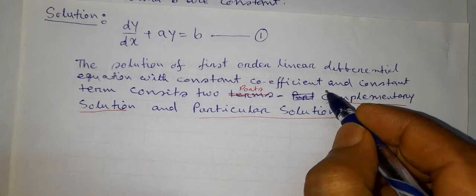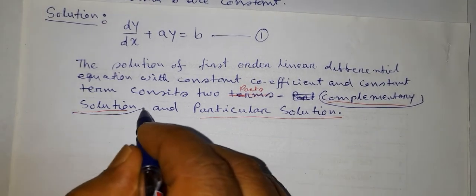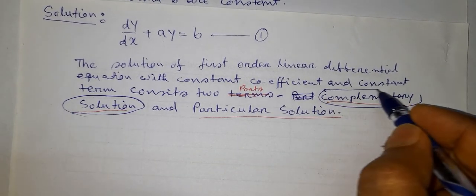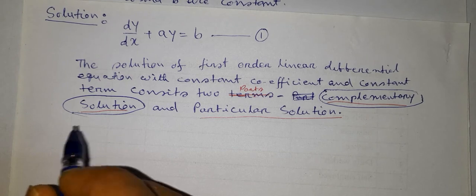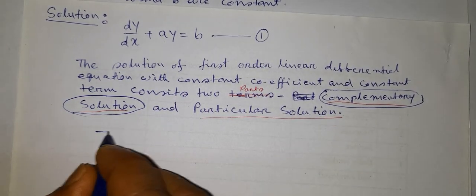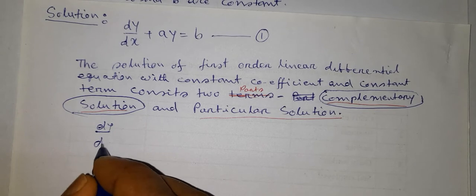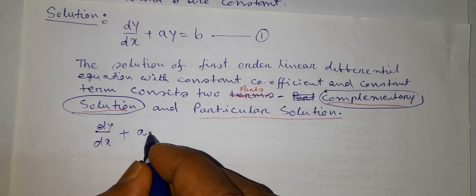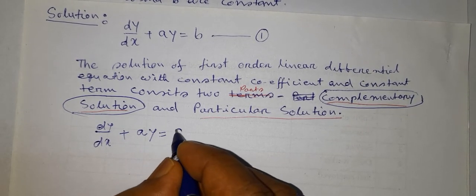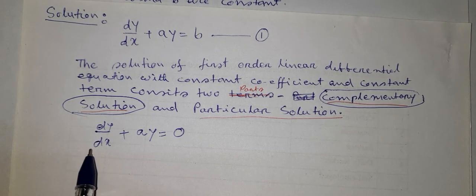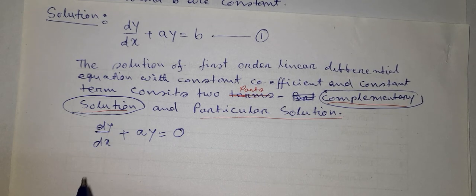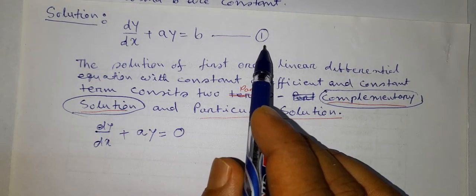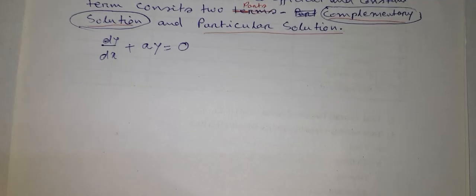The complementary solution is obtained by considering the homogeneous part of this differential equation. This is called the homogeneous differential equation, or the homogeneous part of this differential equation.